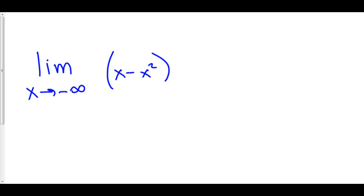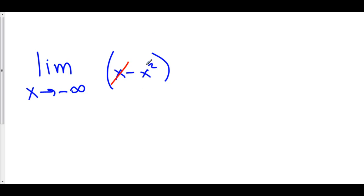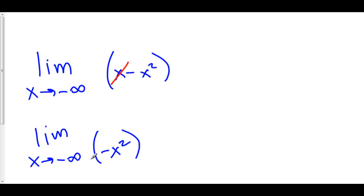Here we have the limit as x approaches negative infinity of x minus x squared. Compared to the magnitude of x squared, we can get rid of the x. So we have the limit as x approaches negative infinity of negative x squared. If we were to square negative infinity, we would get positive infinity, but then we multiply that by negative 1 and it becomes negative infinity again. So the answer is negative infinity — not because x squared is negative infinity; x squared is always going to be positive, but we multiply by the negative out in front.